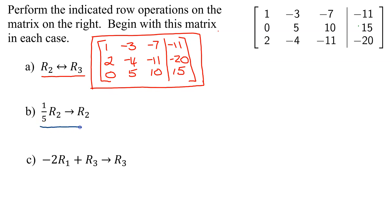Looking at part B, it says take 1/5, multiply it by row 2, and put it in row 2. Remember, we need to begin with this matrix in each case. So row 1 and row 3 are going to stay the same.